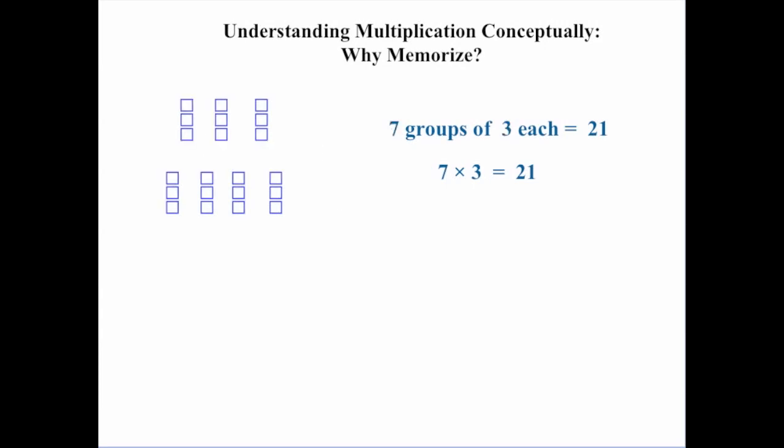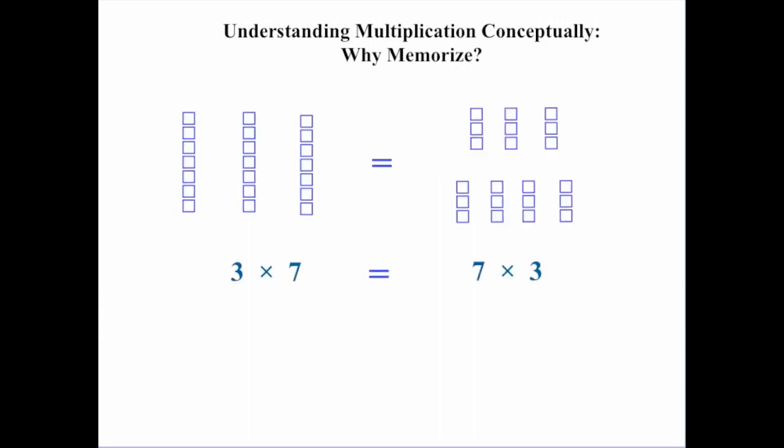Other students might think a little bit differently and come up with 7 groups of 3, which is still going to be 21. When your students compare what they did, they'll see that 3 groups of 7 and 7 groups of 3 are the same, because in each case we got 21. 3 groups of 7 is 21. 7 groups of 3 is also 21.